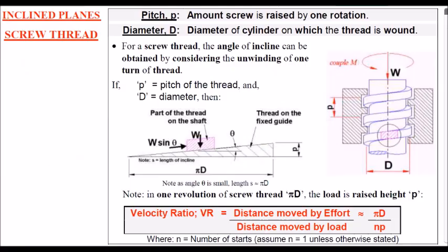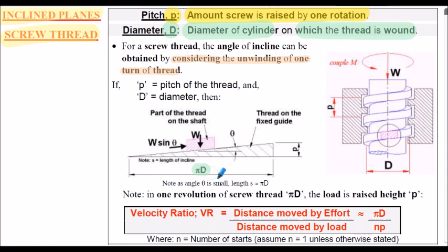Let's consider the inclined planes of a screw thread. Pitch P is the amount the screw is raised in one rotation. Diameter D is the diameter of the cylinder on which the thread is wound. For the horizontal rotation of pi D (the circumference), the load is raised through height P, the pitch. From our generic formula for velocity ratio — distance moved by the effort (pi D) divided by the distance moved by the load (number of starts multiplied by the pitch) — VR equals pi D divided by n times p. We always assume the number of starts n is 1 unless told otherwise.